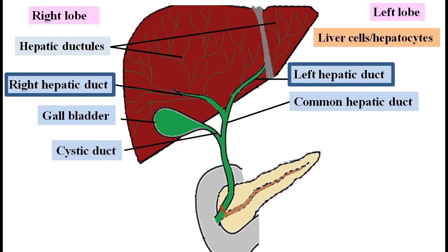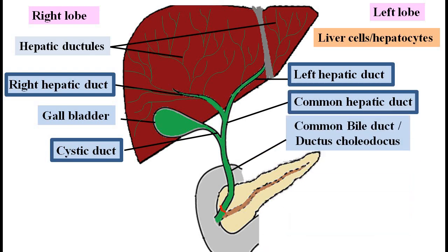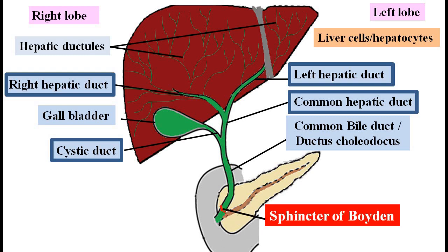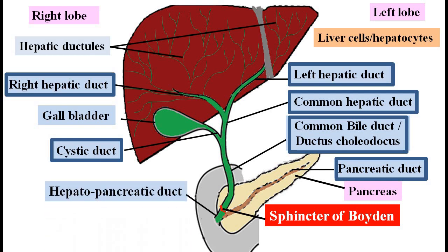The gallbladder has the cystic duct. The cystic duct from the gallbladder joins the common hepatic duct to form the common bile duct. The common bile duct is also called ductus choledochus. The sphincter of Boyden surrounds the common bile duct. Sphincters refer to muscles that normally maintain constriction. From the pancreas arises the pancreatic duct. The common bile duct and the pancreatic duct join together to form the hepato-pancreatic duct.